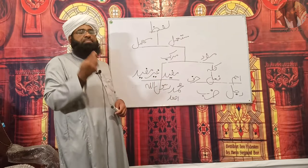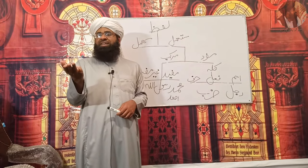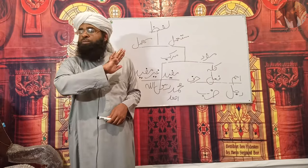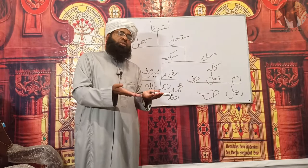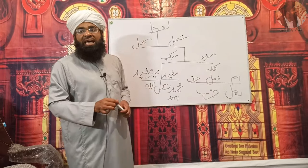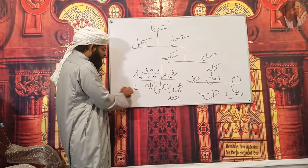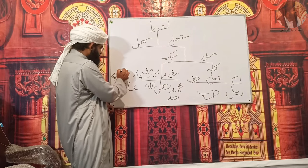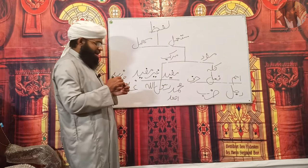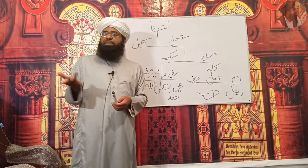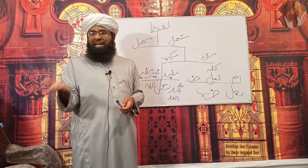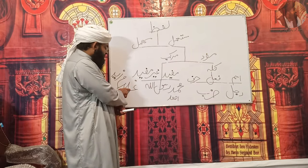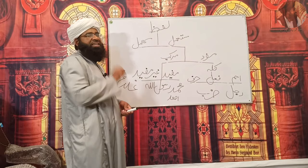مرکب غیر مفید وہ مرکب ہے جب بات کرنے والا بات کر کے خاموش ہو جائے اور سننے والے کو کوئی خبر یا کوئی طلب معلوم نہ ہو، نہ خبر معلوم ہو نہ طلب معلوم ہو، اسے کہتے مرکب غیر مفید۔ مثال: غلام زید — یعنی زید کا غلام — کیا پتہ وہ آیا ہے، گیا ہے، بیٹھا ہے، اٹھا ہے، کھایا پیا؛ یہ کوئی پتہ نہیں، اسے کہتے مرکب غیر مفید۔